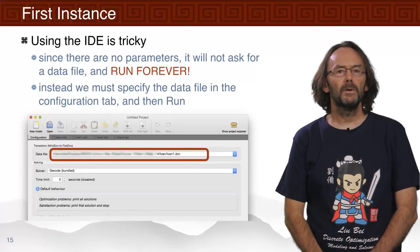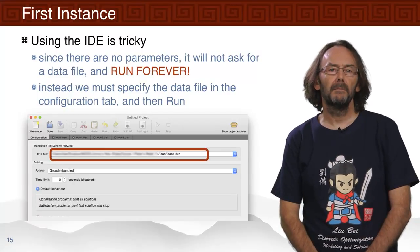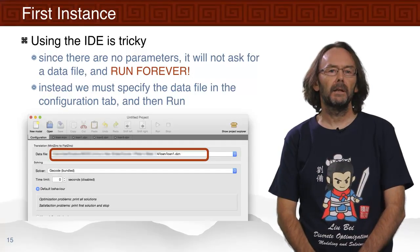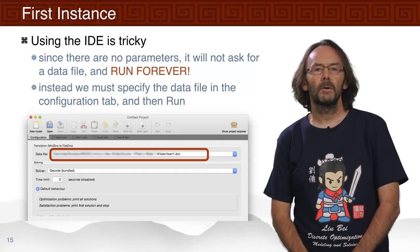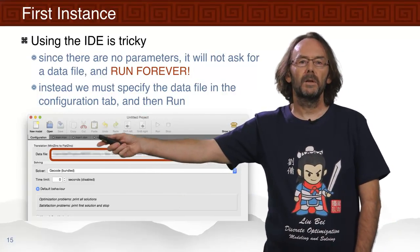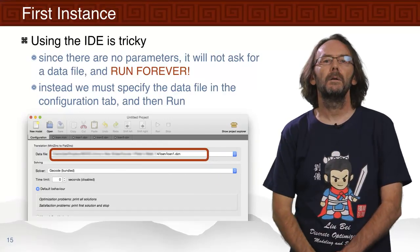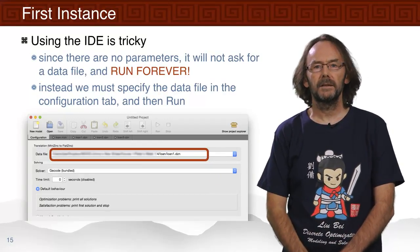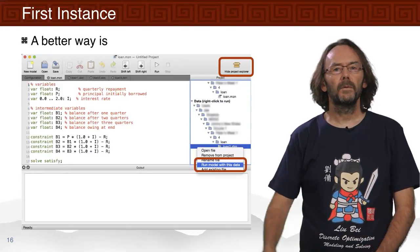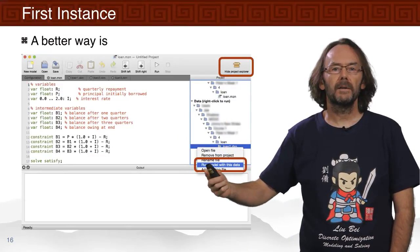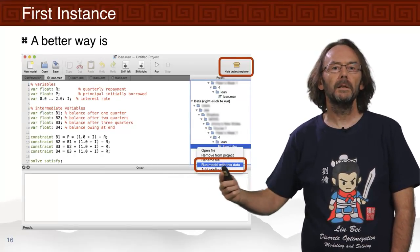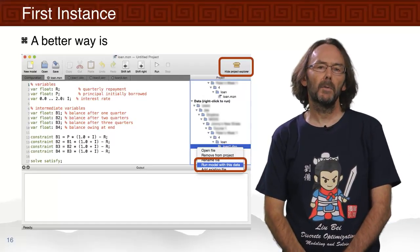How would we use the IDE? It's a bit tricky because MiniZinc expects parameter values, but here we're filling in decision variable values, so it won't by default ask for a data file. We can go to the configuration page and select a data file in the top selector field. Or, if we have a project file open, we can find the data file, have our model open, and say 'run with this data file.'